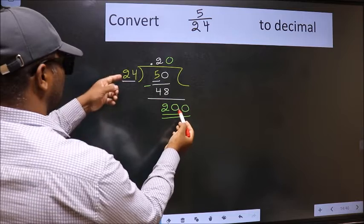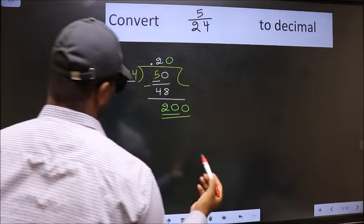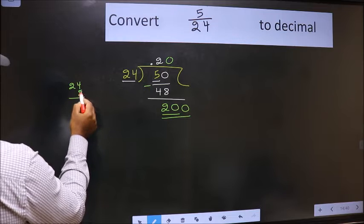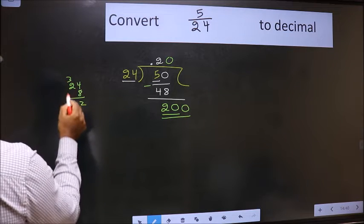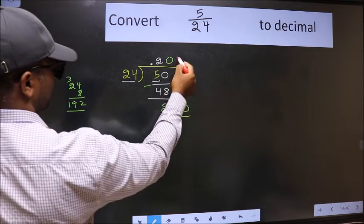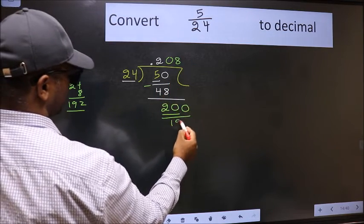A number close to 200 in 24 table is, let us check with 8. 8 4 is 32, 8 2 is 16. 192. So 24 8 is 192.